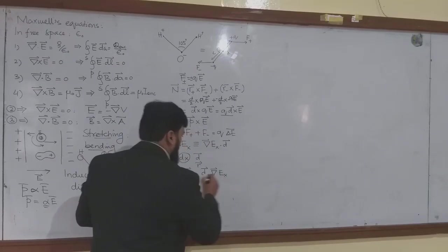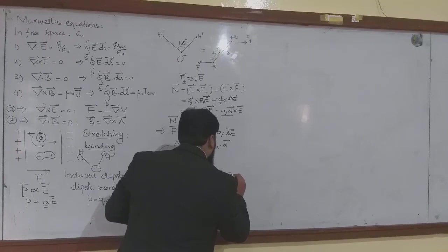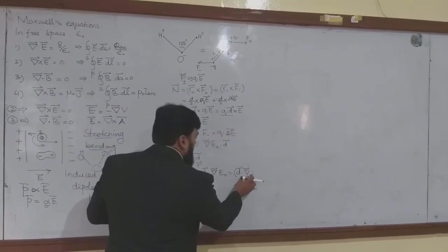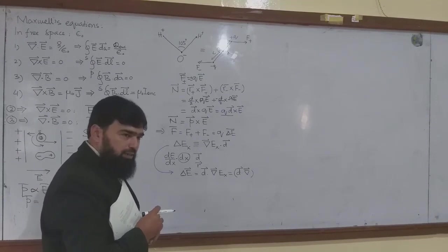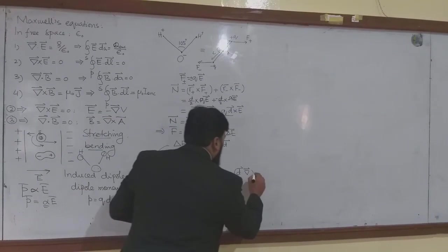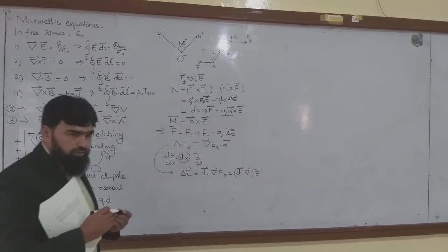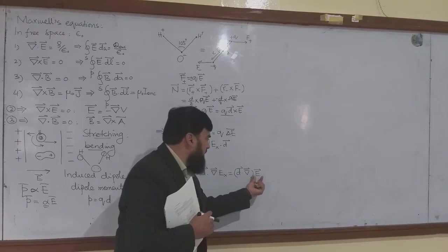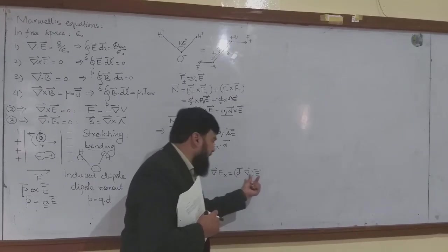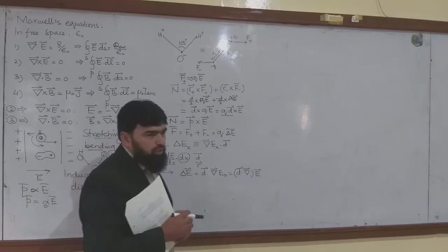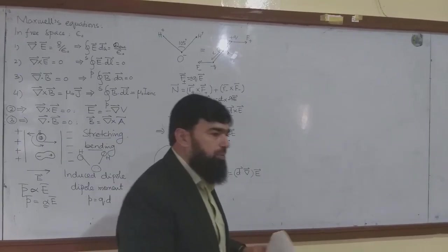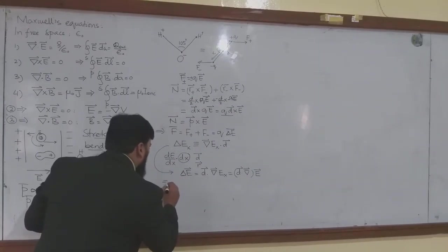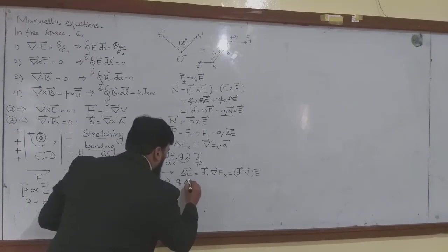If I write this as D dot del, the result of this operation will be a scalar. The vector direction will then be obtained by this scalar operating on the vector E, giving E its direction. So it is just reshuffling or making the proper shape of the equation.